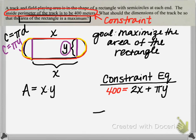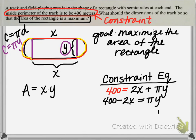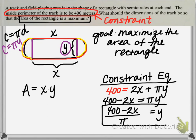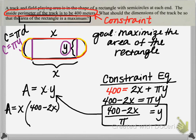The purpose of the constraint equation is to substitute into the area equation and eliminate a variable. We need to solve for one variable — I'll solve for Y. Subtracting 2X from both sides and dividing by π gives Y = (400 − 2X) / π. I put a box around this because it relates X and Y in our diagram. Now substituting this into the area equation gives A = X times (400 − 2X) / π.